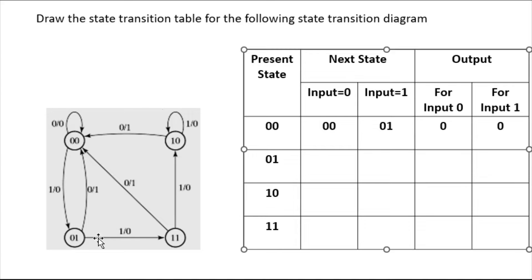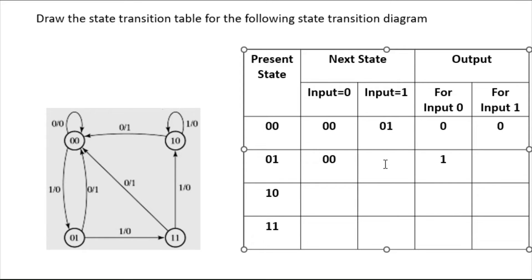Now for state 01: when input is 0, it goes to state 00 and the output is 1. For input 1, state 01 is going to state 11, so we put 11, and the output is 0.